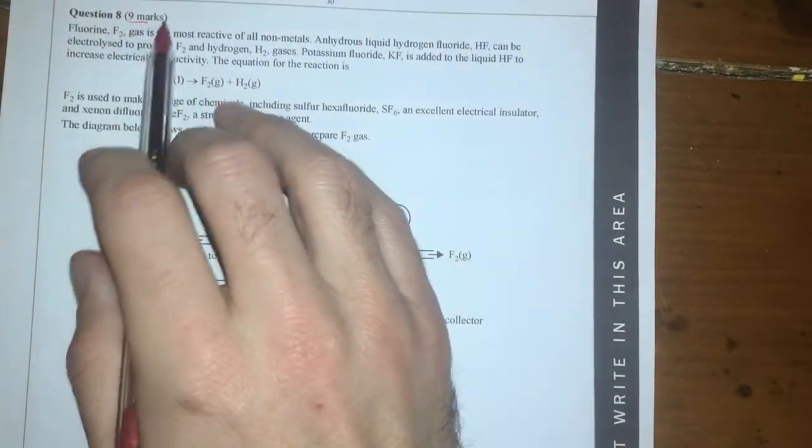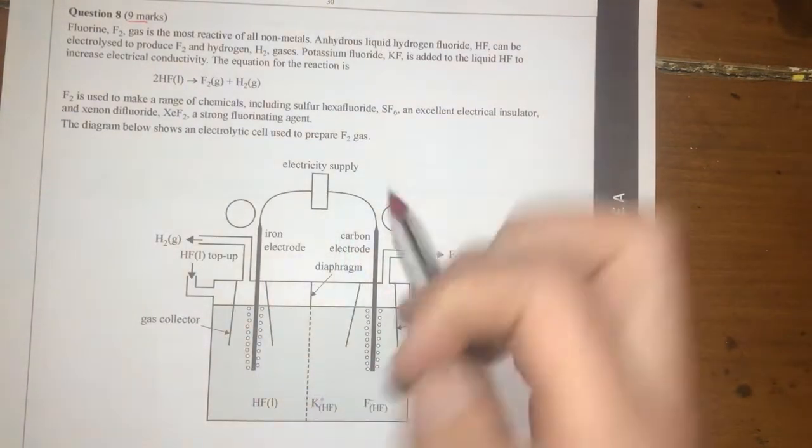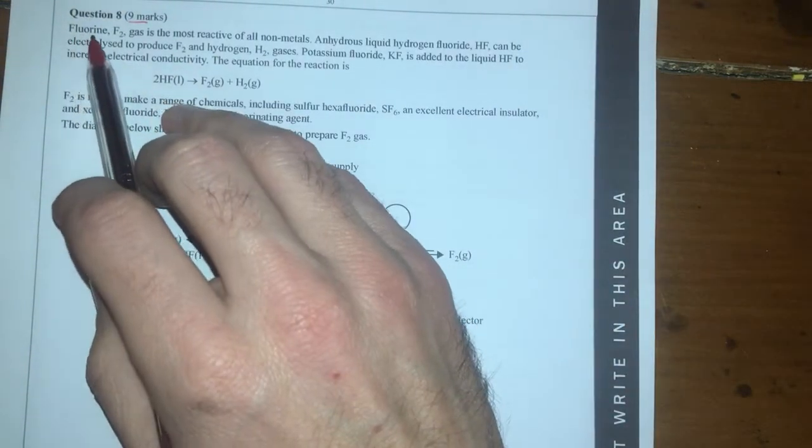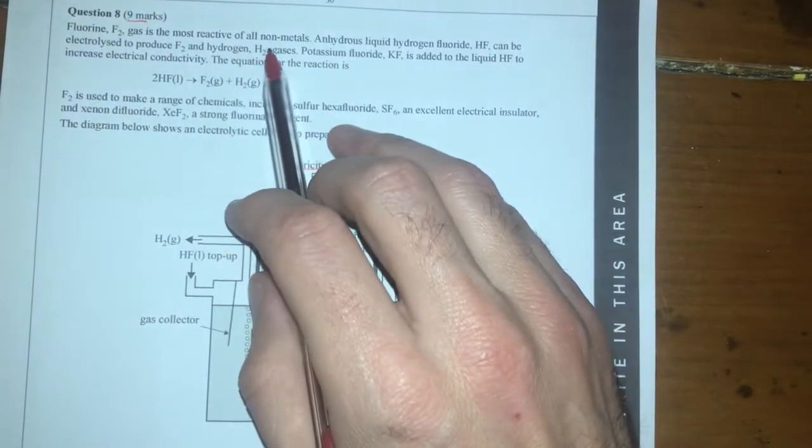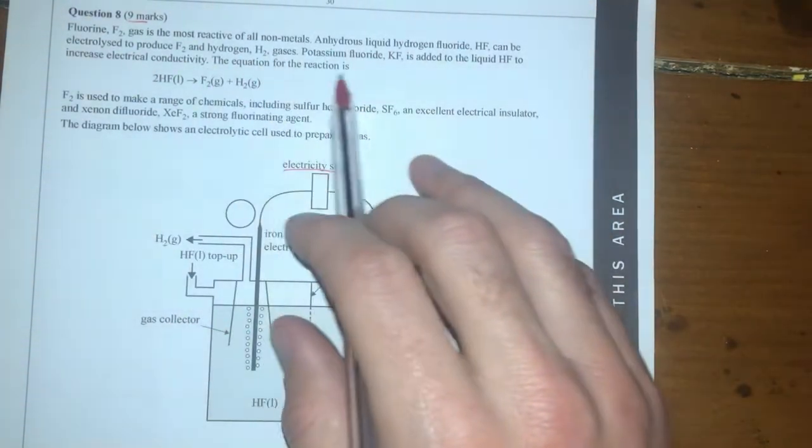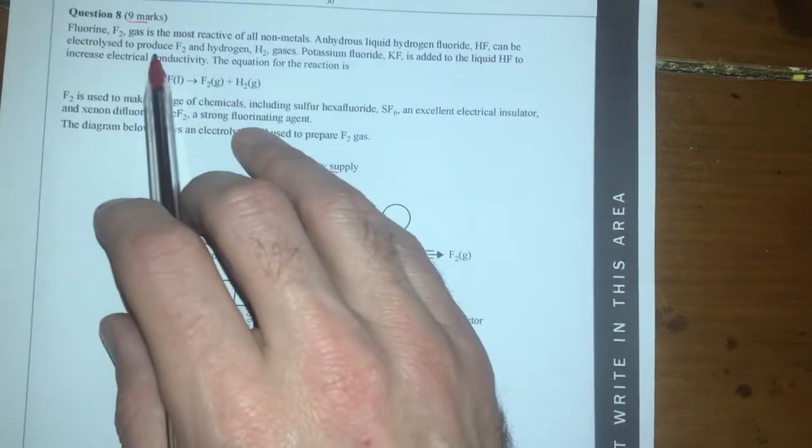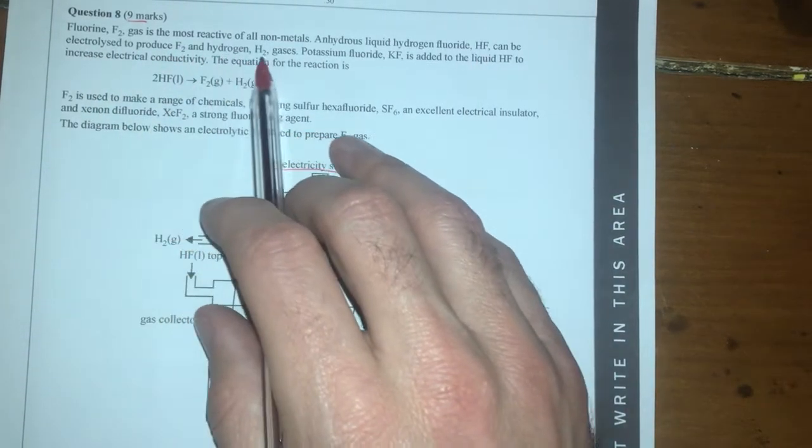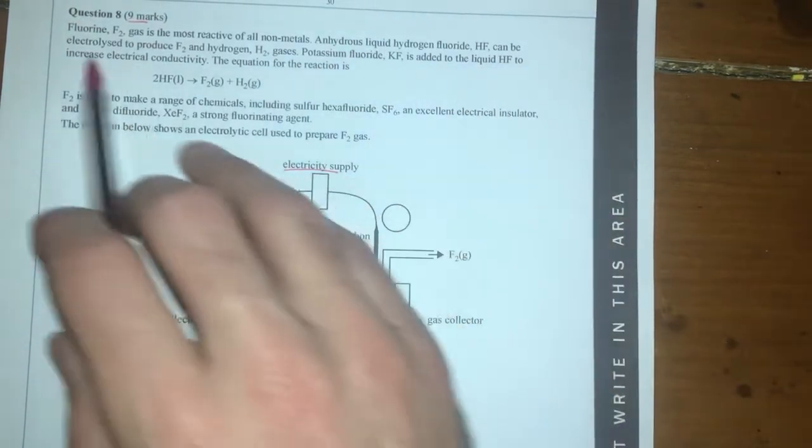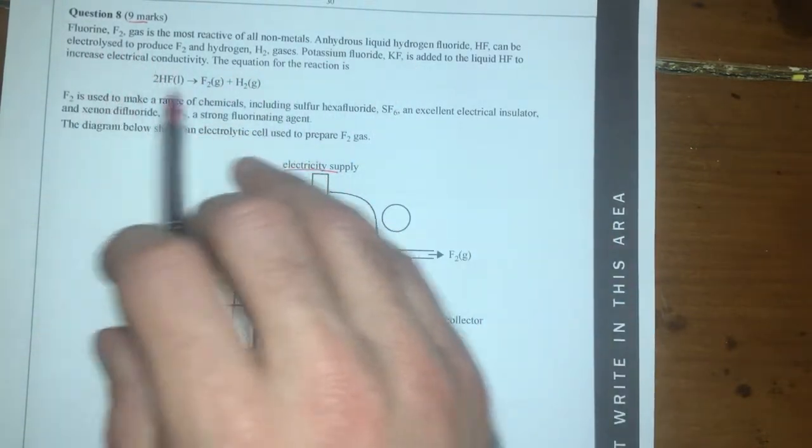Question 8 worth 9 marks. Looking at this question we've got some form of electrolytic cell because we have an electricity supply here. Fluorine gas is the most reactive of all metals, so this is producing fluorine gas by the looks of it. HF can be electrolysed to produce fluorine and hydrogen gases. Potassium fluoride is added to liquid HF to increase electrical conductivity. Obviously the more ions you have in there the more it conducts electricity which is important.